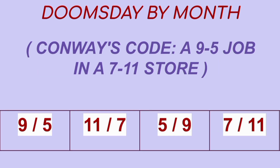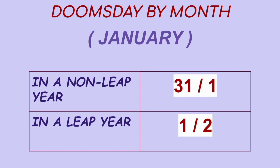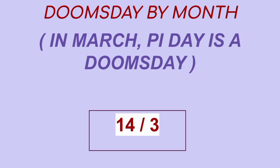Conway's mnemonic for odd-numbered months like 5, 7, 9, and 11 is 'a 9-to-5 job at a 7-11 store': 9th of May, 11th of July, 5th of September, and 7th of November. In a non-leap year, January 31st is a doomsday; in a leap year, February 1st is a doomsday. In March, Pi Day — the 14th of March — is a doomsday.